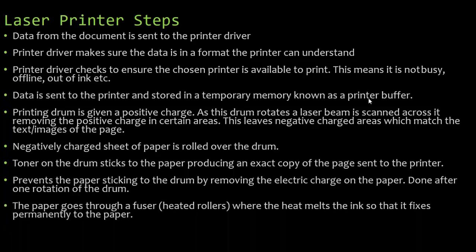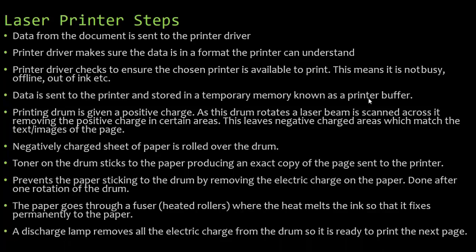The paper goes through a fuser, which is heated rollers, where the heat melts the ink so that it fixes permanently to the paper. This is why, if you've ever taken a sheet of paper from a laser printer, it feels nice and warm. A discharge lamp then removes all the electric charge from the drum so it's ready to print the next page and go through all those steps again.